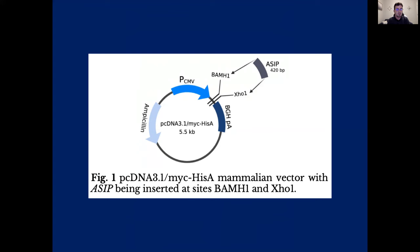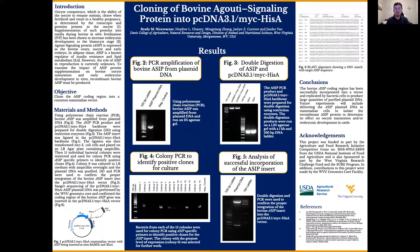The ligation and E. coli cells were then plated on an LB agar plate containing ampicillin. Then from that first plate, 15 individual bacterial colonies were selected and used for colony PCR to identify positive clones.